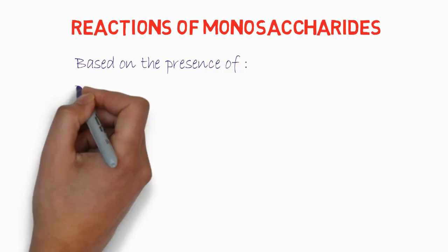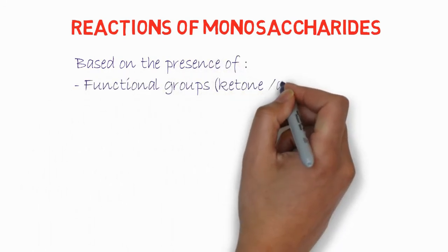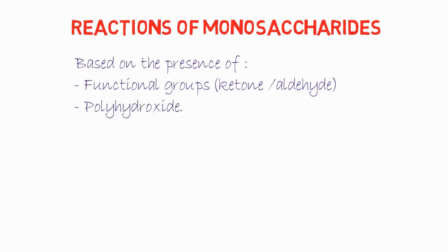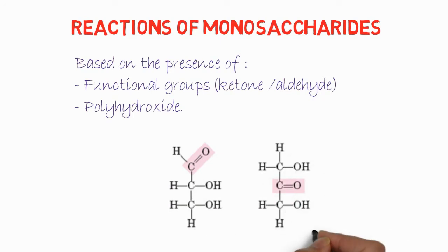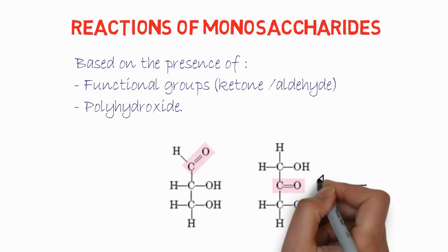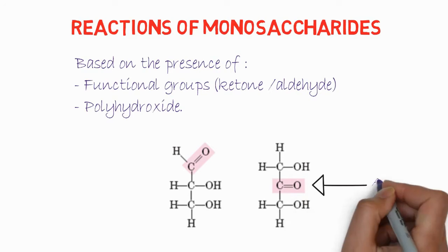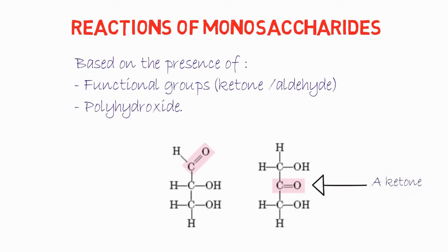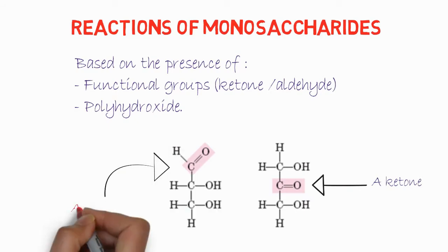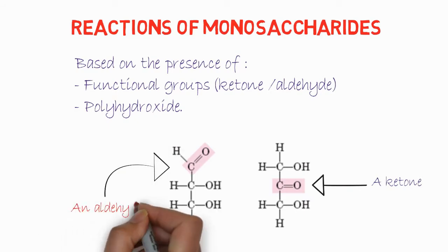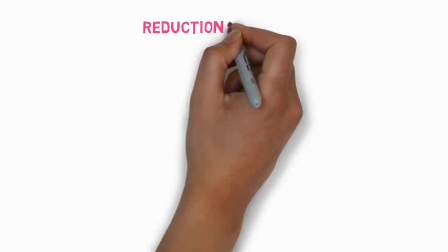The reactions of monosaccharides are based either on the presence of functional groups — that is, ketones or aldehydes — or polyhydroxides, that is, hydroxyl groups. These are the two important functional groups: the ketonic functional group and the aldehyde group. The reactions are mostly based on these.